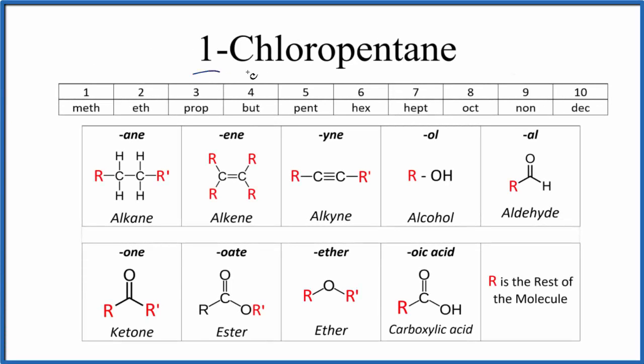Let's write the structural formula for 1-chloropentane. So when we look at 1-chloropentane, it ends in A-N-E. That tells us that we're going to have an alkane. It's going to be carbons single-bonded to hydrogens, and we know that we're going to have a chlorine in there somewhere.